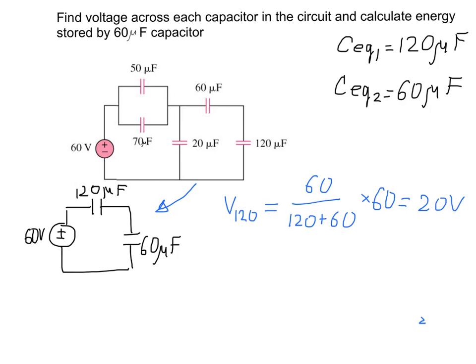The voltage across the second equivalent capacitor (60 microfarad equivalent) is found by subtracting: since the total voltage is 60 volts and the first capacitor has 20 volts, the voltage across the second capacitor is 60 minus 20, which is 40 volts.